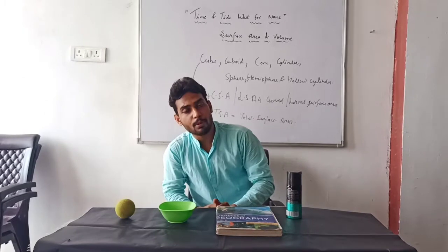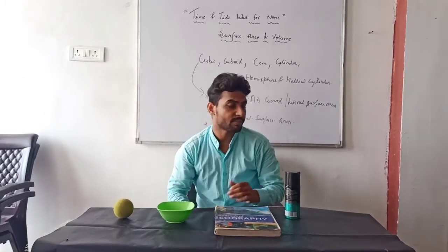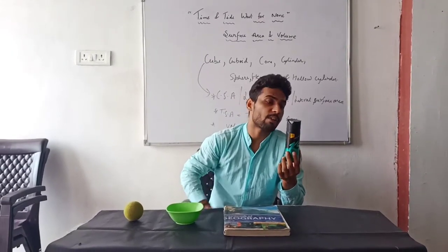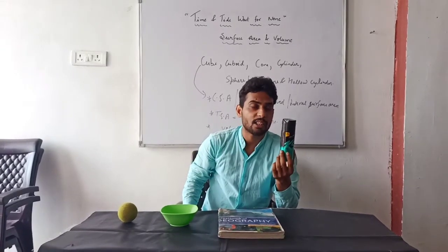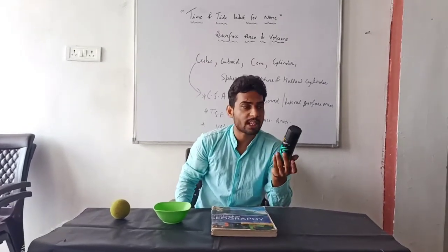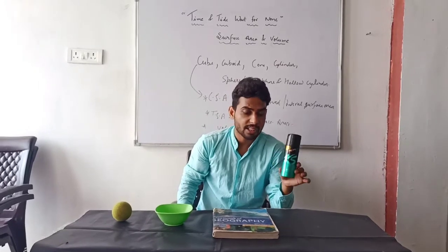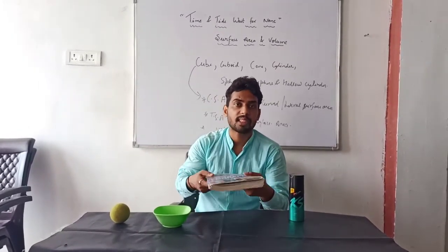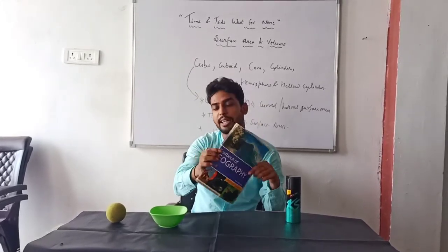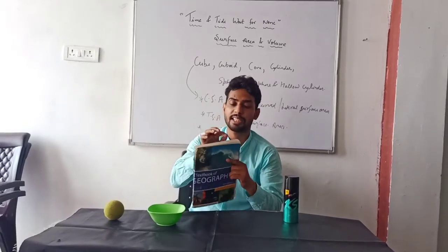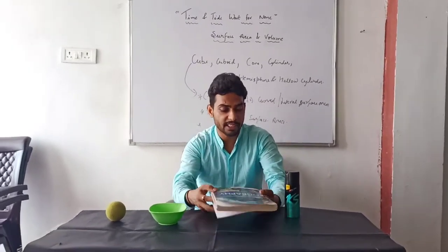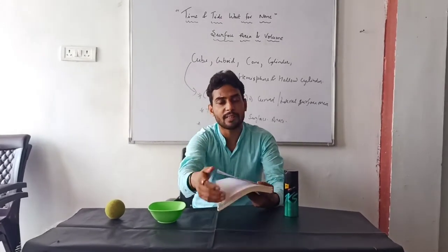Now let's talk about TSA - Total Surface Area. Total surface area means: if you have to give something as a gift and you want to pack it completely, you cover every surface. CSA only covers the curved surface, leaving the top and bottom. But TSA includes the curved surface and both the top and bottom surfaces together.